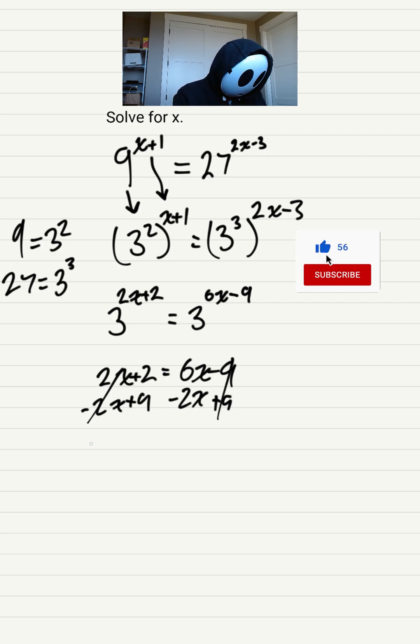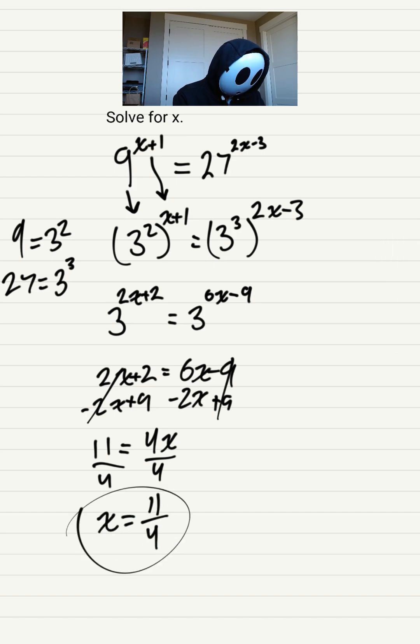We will be left with 11 equals 4x. All I have to do is divide both sides by 4, and we get x equals 11 over 4. And you're done. Remember, comment down below and let me know what kind of math questions you'd like me to solve. I'll see you on the next one.